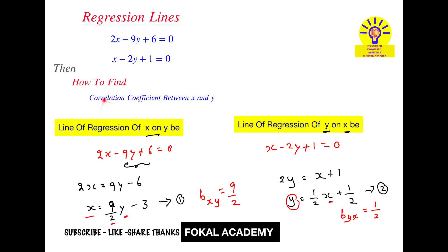Now recall the correlation coefficient formula in terms of bxy and byx. That is r, correlation coefficient, equal to root of bxy into byx. Now substitute here, we get r equal to root of 9 by 2 into 1 by 2, it becomes root of 9 by 4, nothing but 3 by 2. It is equal to 1.5.